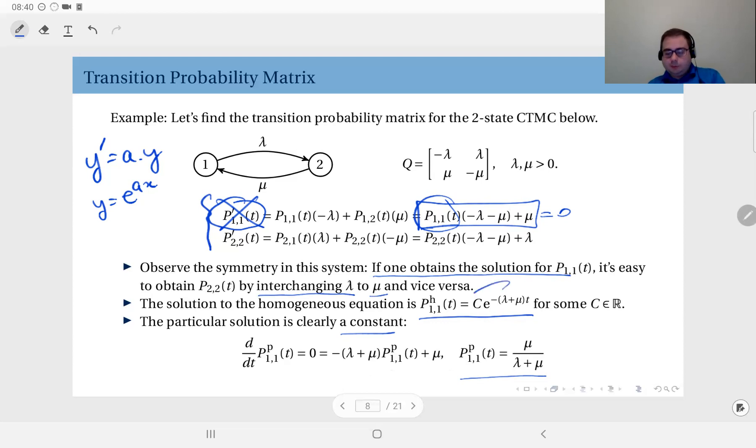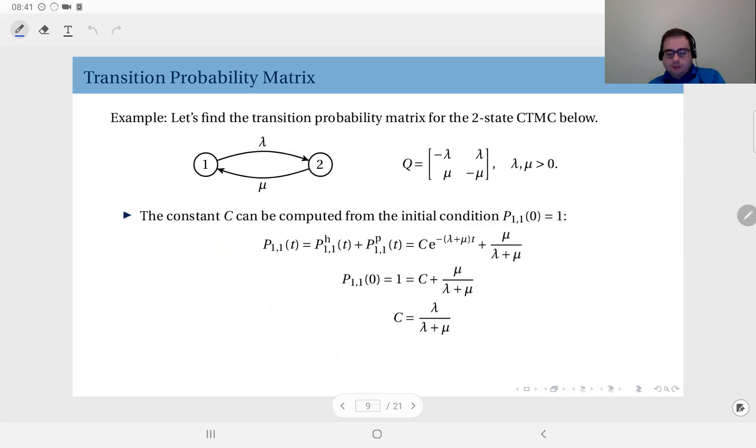Now I have the homogeneous solution and the particular solution. Therefore, add them up. P11(t) is equal to their sum. But at this point, of course, I do not know the value of C. To find that, I will have to use the initial value where the transition probability from one to one within time zero is one because there is no time to make a transition. So the probability that I stay in state one should be one.